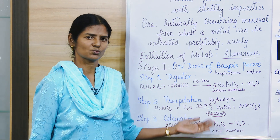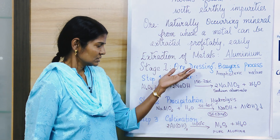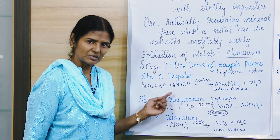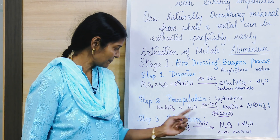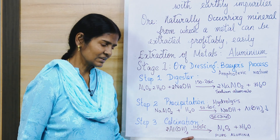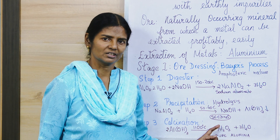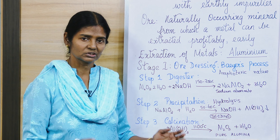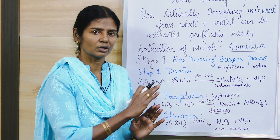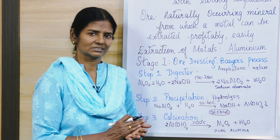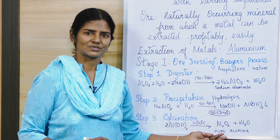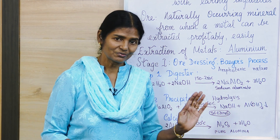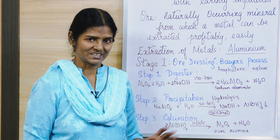This is the end of stage one, which is made of three steps: the digester (step one), precipitation with seeding (step two), and ignition to give pure alumina (step three). Stage two — conversion of other forms into oxide form — is not required since we already have the oxide form. Stage three will be covered in the next video. Don't forget to like, share, and subscribe. Bye-bye.